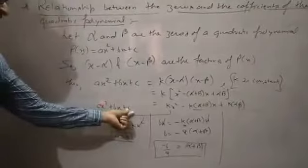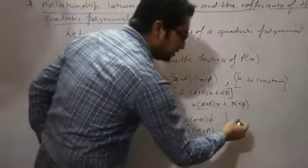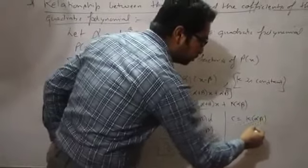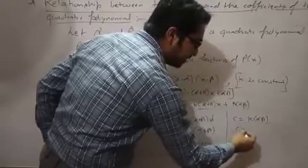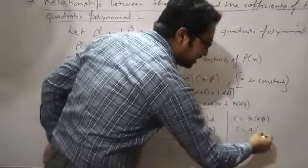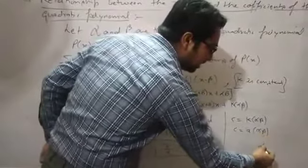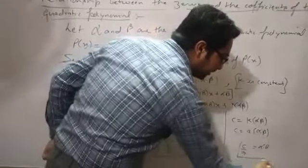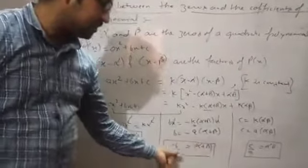Comparing the constant terms: c = k·alpha·beta. Substituting k = a, we get c = a·alpha·beta, therefore alpha times beta = c/a. So we have two important results: alpha + beta = -b/a and alpha·beta = c/a.